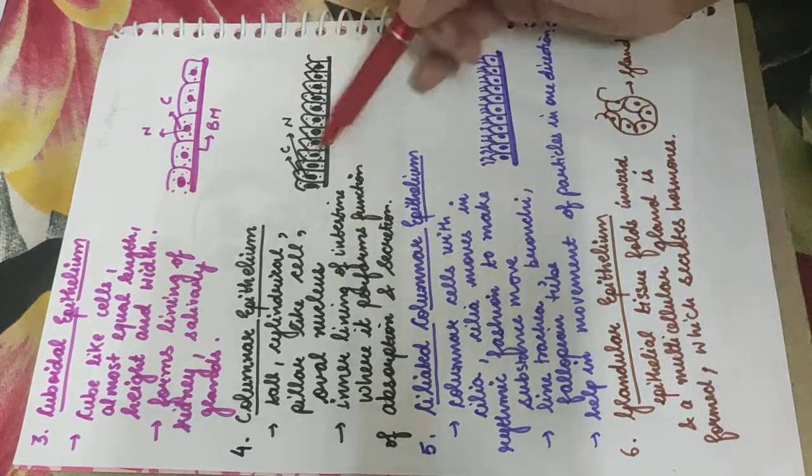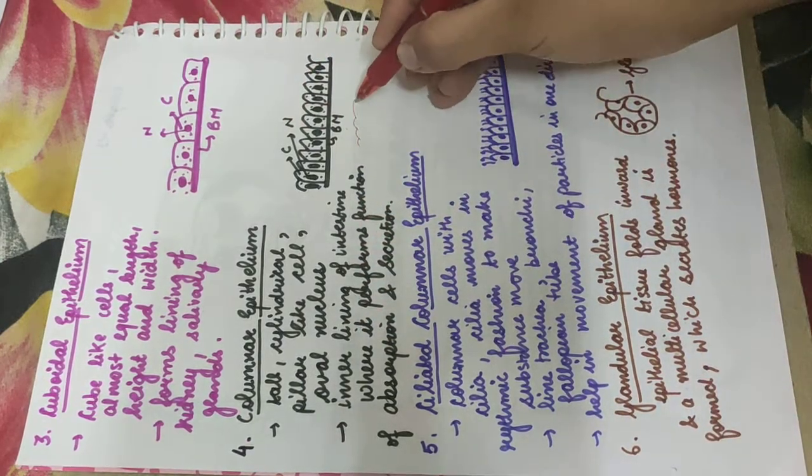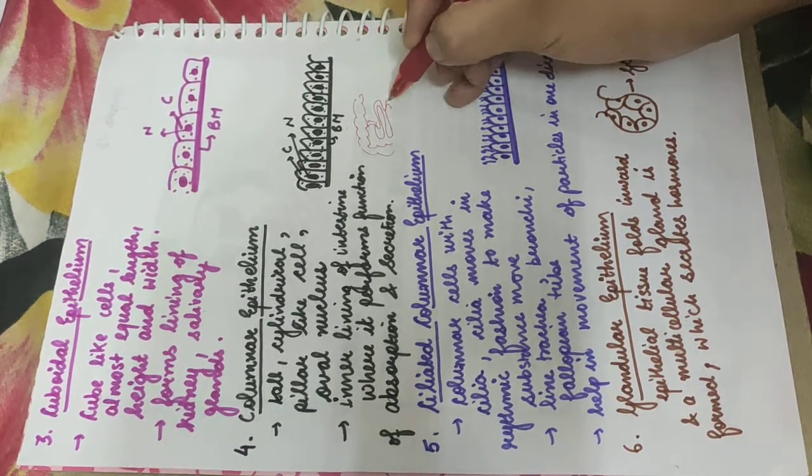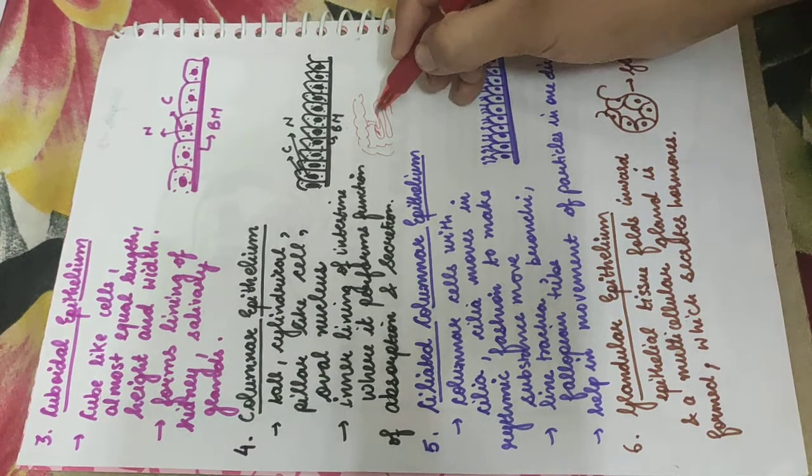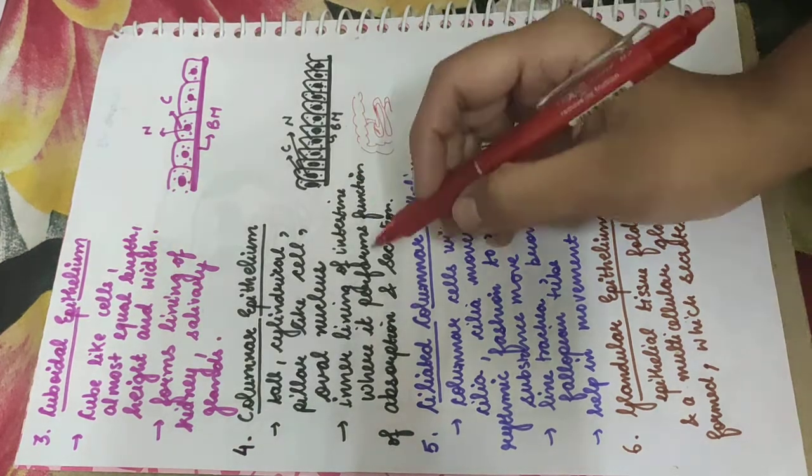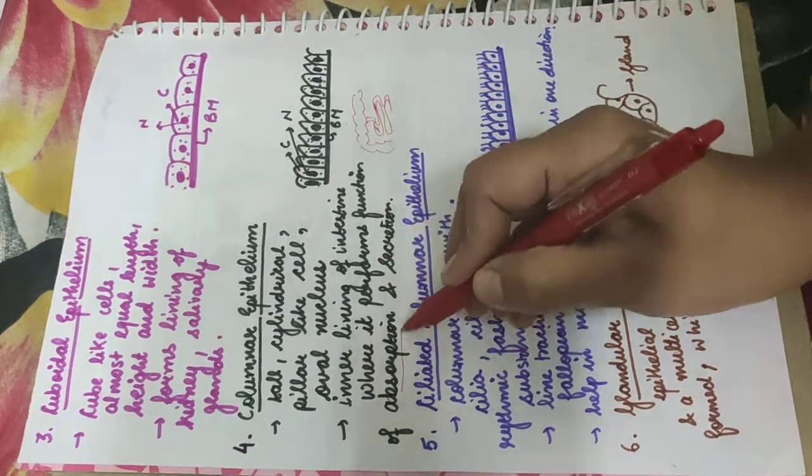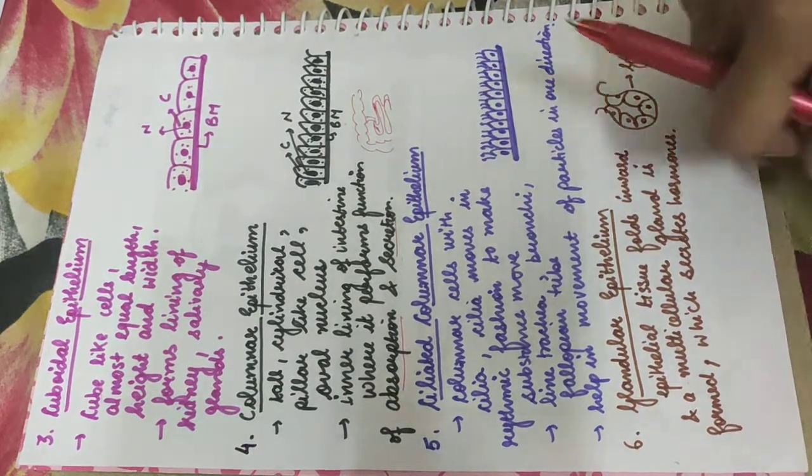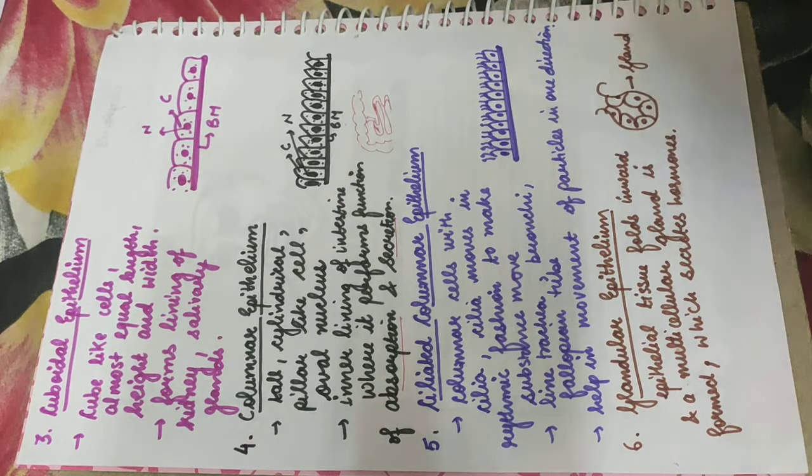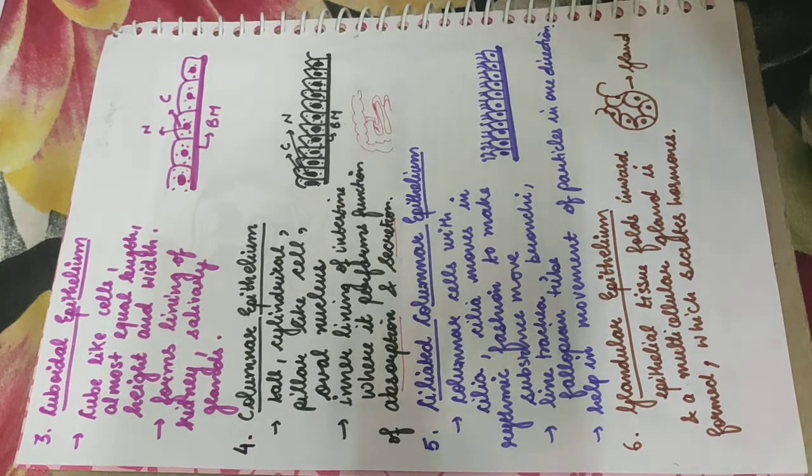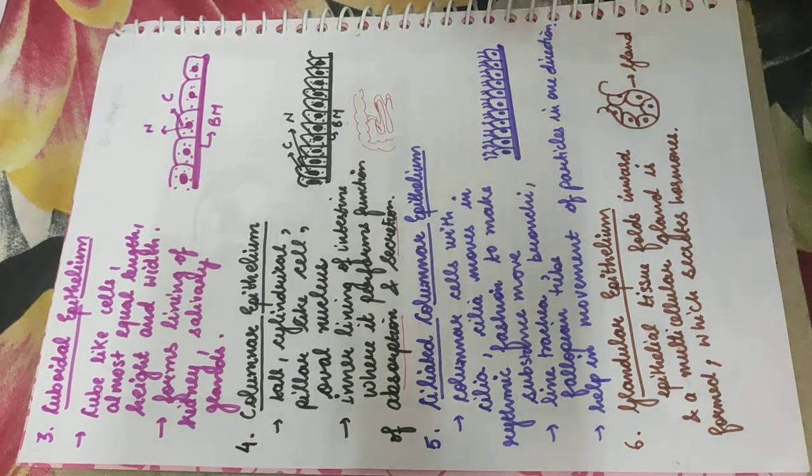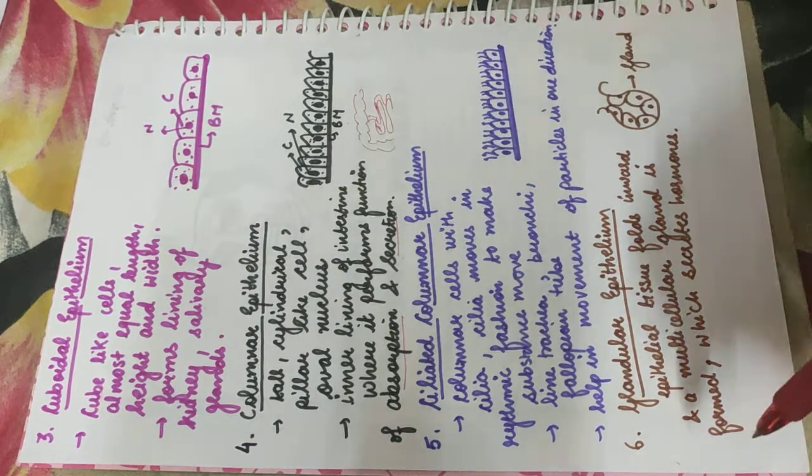It is present in the inner lining of the intestine. Columnar epithelium is found where major functions are absorption or secretion. The intestine secretes many enzymes and also absorbs food. So it is present in areas where the function of absorption and secretion is required.